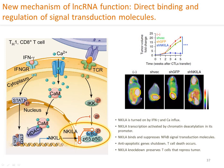Normally, killer T cells activated by tumor cells will die of cell death. With NKILA knockdown, the killer T cells are preserved to suppress tumor expression in the xenograft model. As seen in small hairpin SH and NKILA, the tumor mass is much reduced.